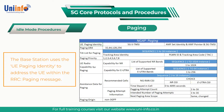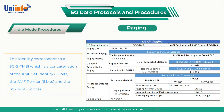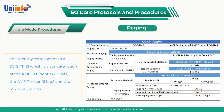The base station uses the UE paging identity to address the UE within the RRC paging message. This identity corresponds to a 5G-S-TMSI, which is a concatenation of the AMF set identity (10 bits),